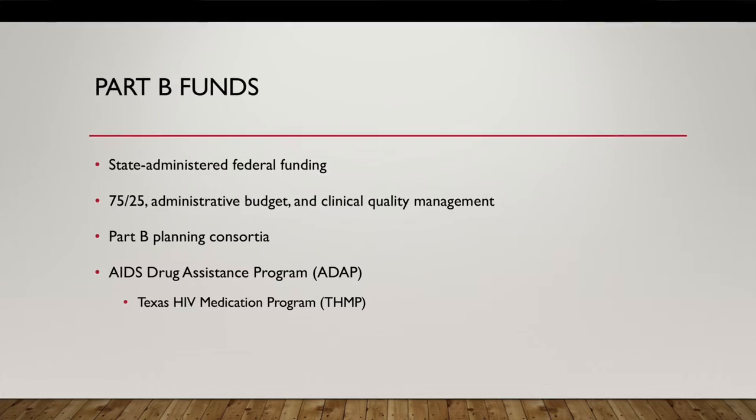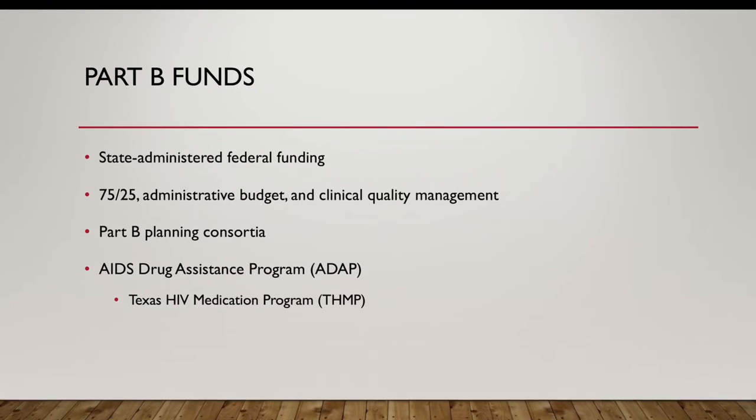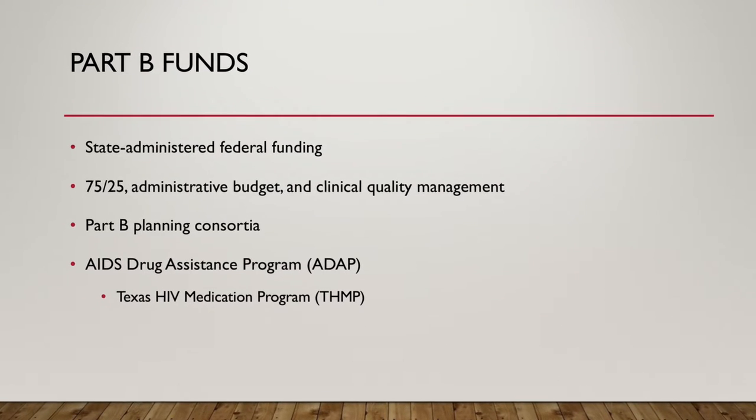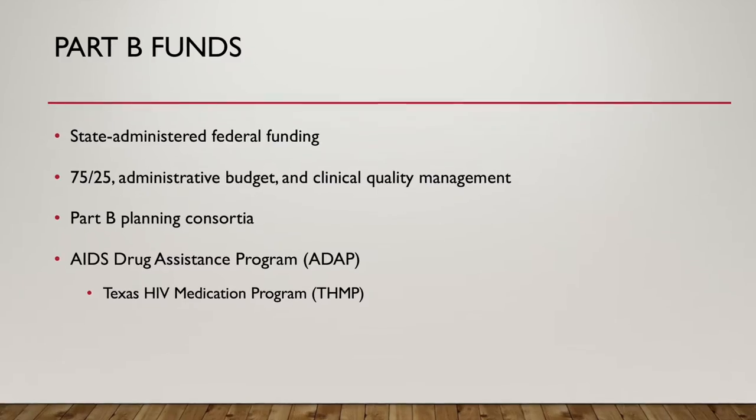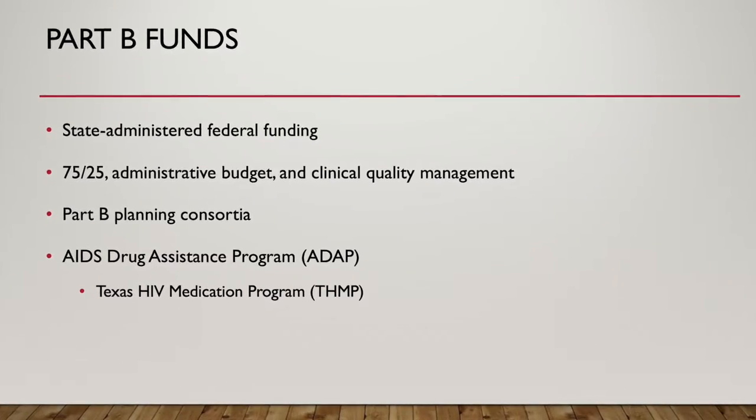Part B funding goes to the states and territories, and that money can be used for medical services as well as support services. 75% is going to be used for medical services and the remaining 25% would be used for support services. The money can also be used for the AIDS Drug Assistance Program and for the Texas HIV Medication Program.